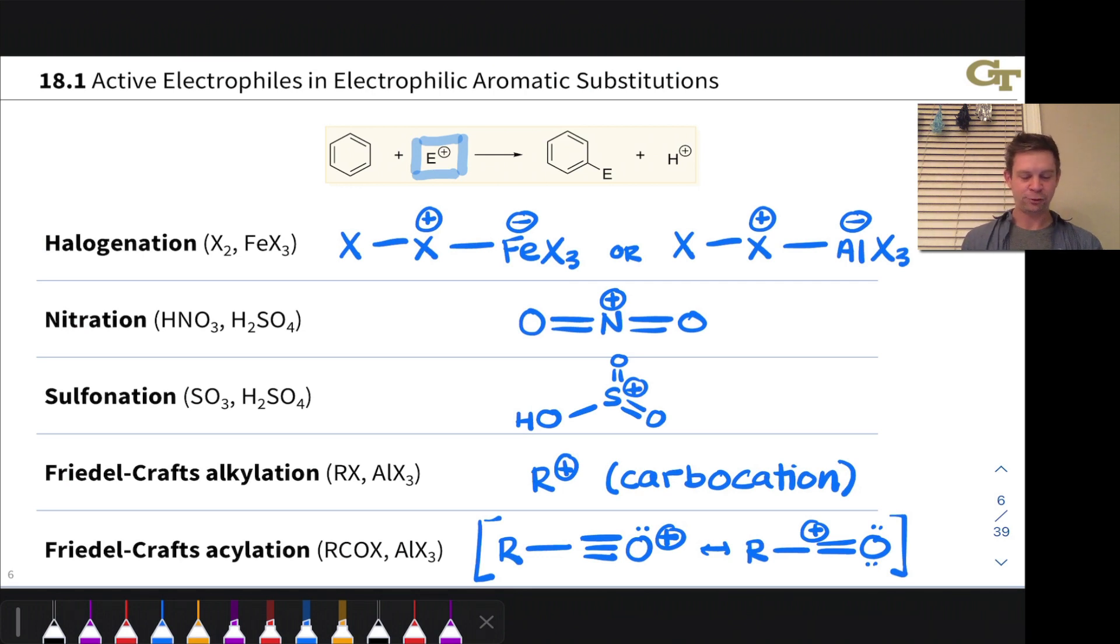In the first case, we end up with a halogen coordinated to this wonky thing. Ultimately, this Lewis acid we're going to use, FeBr3, FeCl3, or AlCl3 are the most common in these reactions. Coordinates to the halogen and renders this hanging X atom extremely electrophilic.